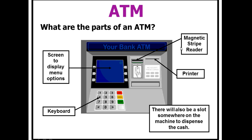In the actual ATM — and you'll see them on many streets — we have a magnetic strip reader, and it would also now be reading chips as well, so there's a chip reader inside there too. We have the printer, which is an output device, we have the keyboard which is a numeric pad, and we need a screen which displays our options.